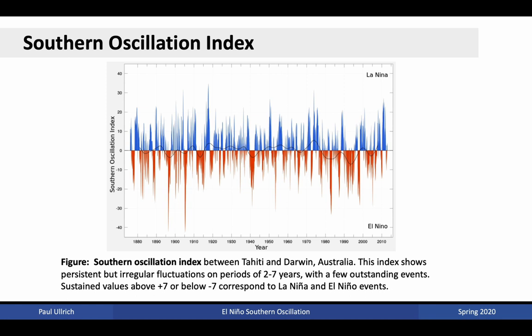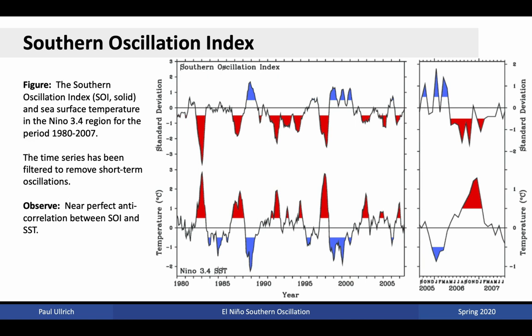Major La Niña events occurred in 1973-74, 75-76, 88-89, 98-99, and 2010-2011. Major El Niño events occurred in 1982-83, 97-98, and 2015-2016. Here we see in the top plot the Southern Oscillation Index, and in the bottom plot the sea surface temperature differences under the Niño 3.4 region, which is a measurement region for sea surface temperatures in the central Pacific. What we see is near-exact anticorrelation between the Southern Oscillation Index and sea surface temperatures within this region. Whenever an El Niño event occurs corresponding to a negative value of the Southern Oscillation Index, we see much warmer temperatures through the central Pacific. Analogously, when we see a positive Southern Oscillation Index, we see much cooler sea surface temperatures in the central Pacific. The time series has been filtered to remove short-term oscillations.